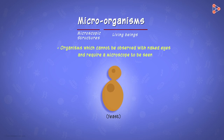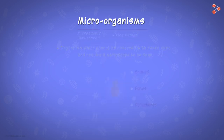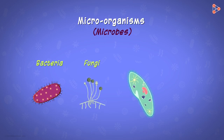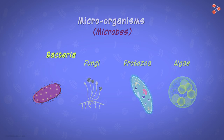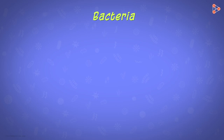These tiny creatures come in various shapes, forms, and structures. For studying them, a proper categorization is really necessary. Thus, we classify these microorganisms — simply referred to as microbes — into four major classes: bacteria, fungi, protozoa, and algae.